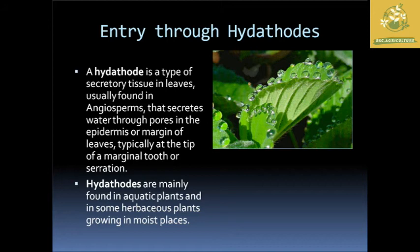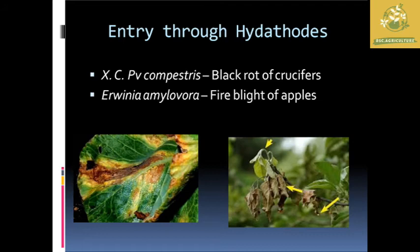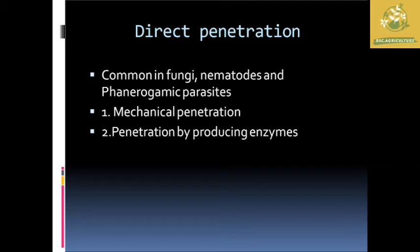Entry through hydathodes: hydathodes are secretory tissue found in angiosperms that secrete water through pores of the epidermis at the margins and tips of leaves. They are mainly found in aquatic plants and herbaceous plants grown in moist places. Examples of pathogens entering through hydathodes include Xanthomonas campestris pv. campestris, causing black rot of crucifers, and Erwinia amylovora, causing fire blight of apple.